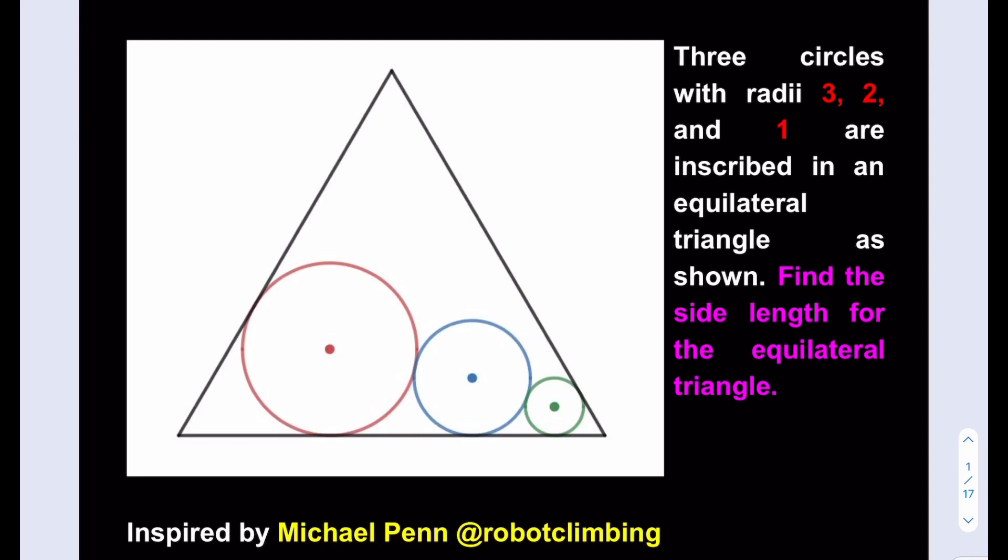So in the original problem it was three squares that were in this 1 to 2 to 3 ratio, and this time we're going to be doing this with circles. In the comments to the video they were wondering how to do this with circles, so I just decided to do the video and see how that goes.